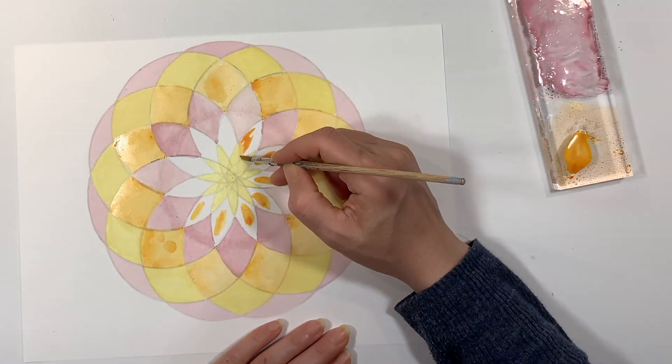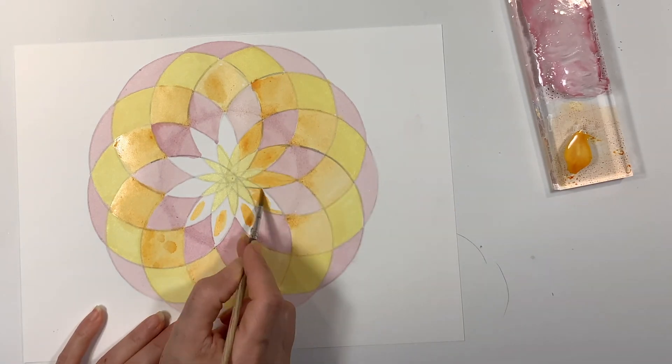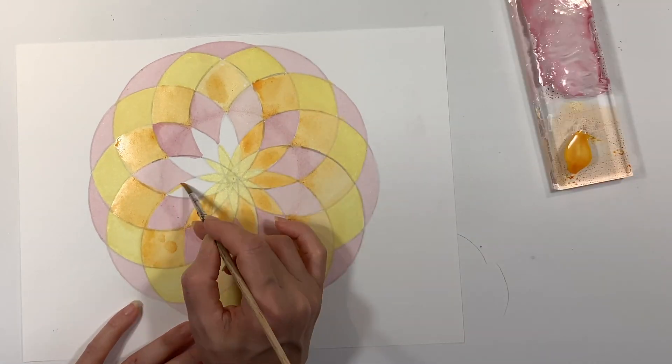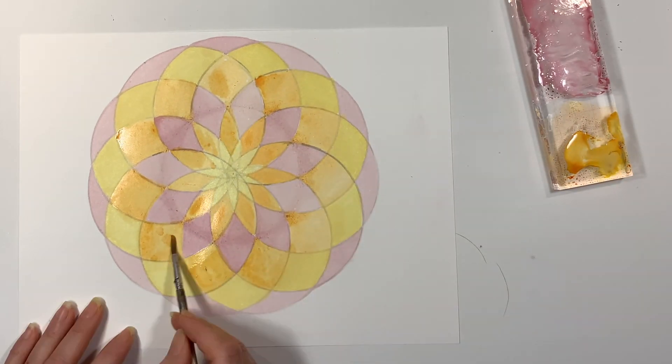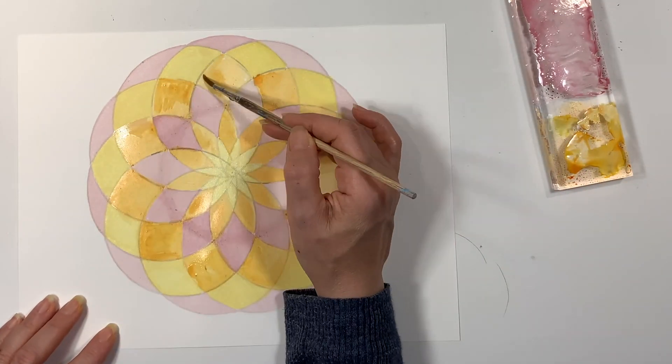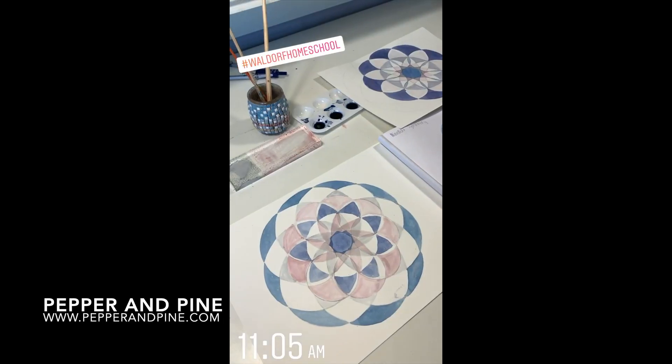Now it's easy to distort the image if you stray outside the lines when you are watercoloring, so do try to stay inside the lines so that you can preserve the geometry of your final image. I'm just going to clean it up a little bit by adding a little bit more orange to those last segments and then we're done.